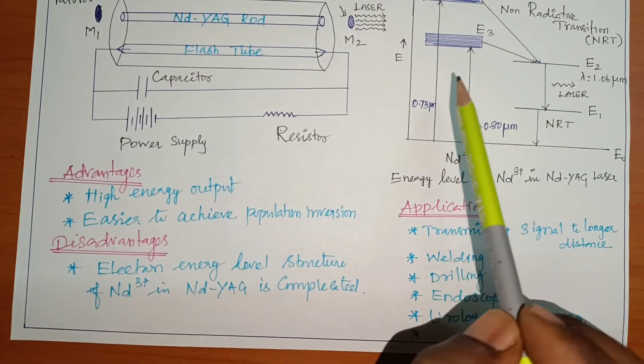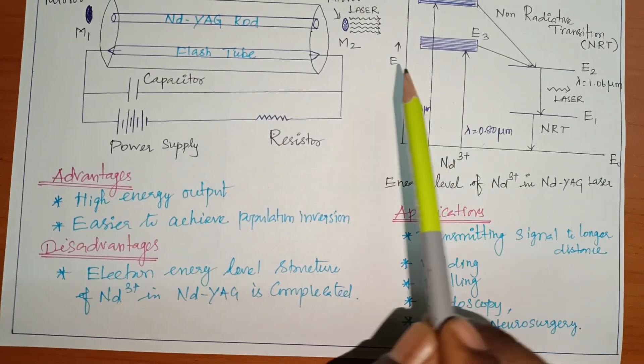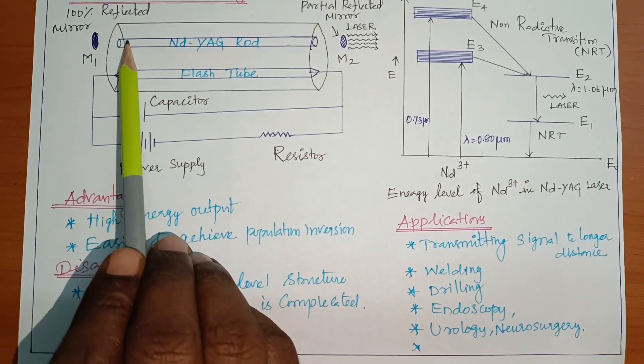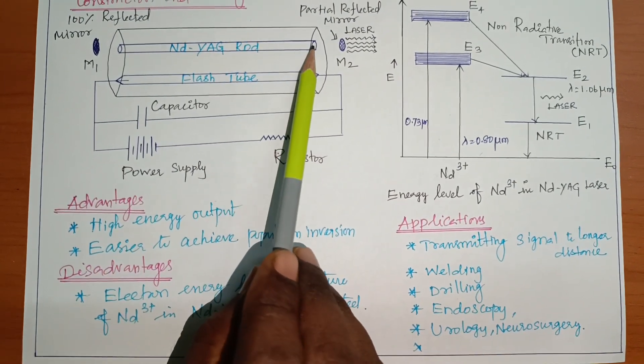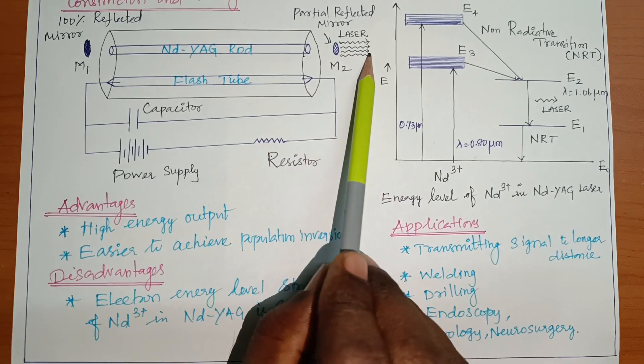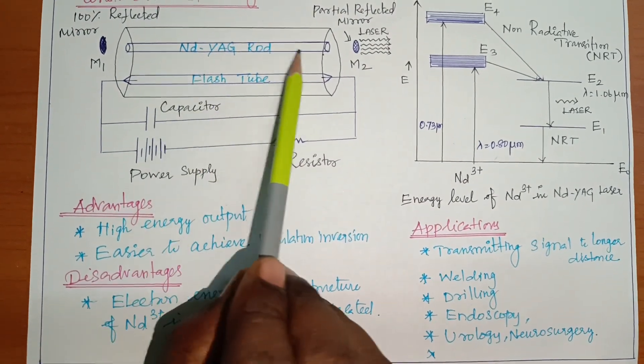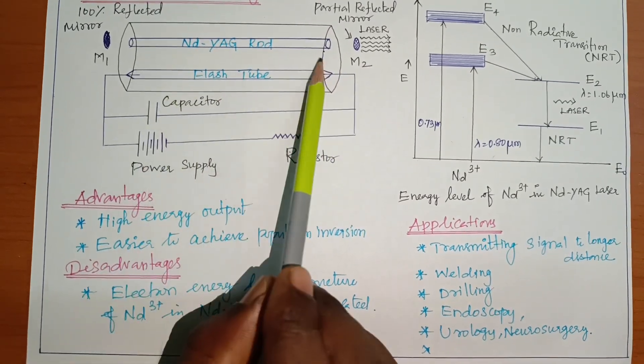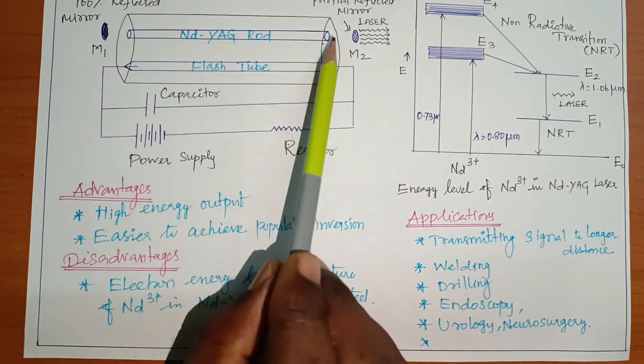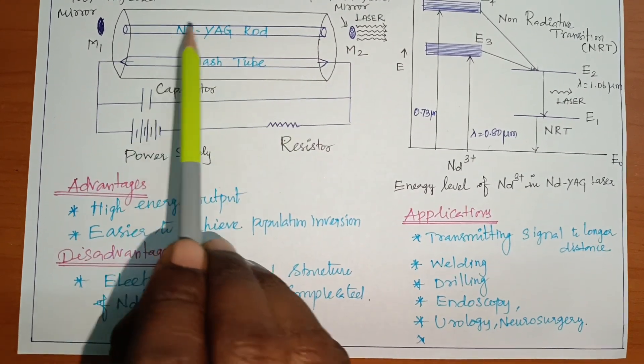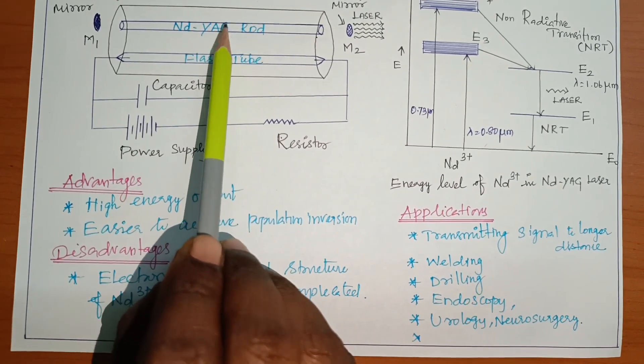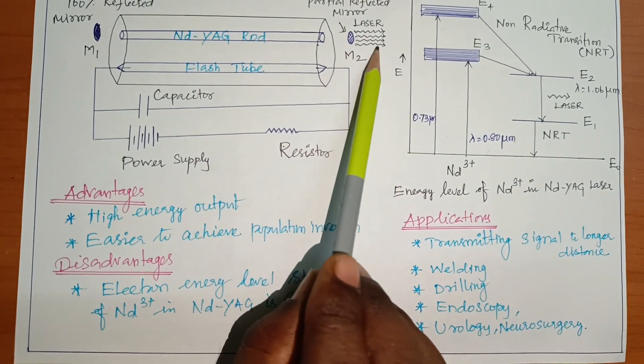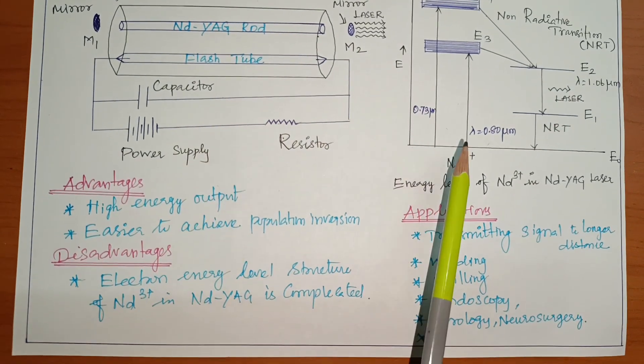Energy continues on. So, if we get sufficient energy then only the laser is through partially reflected mirror. That is the back and forth of this mirror. Back and forth of the mirror. If the achieved sufficient energy the laser is through partially reflected mirror. So, construction and working.